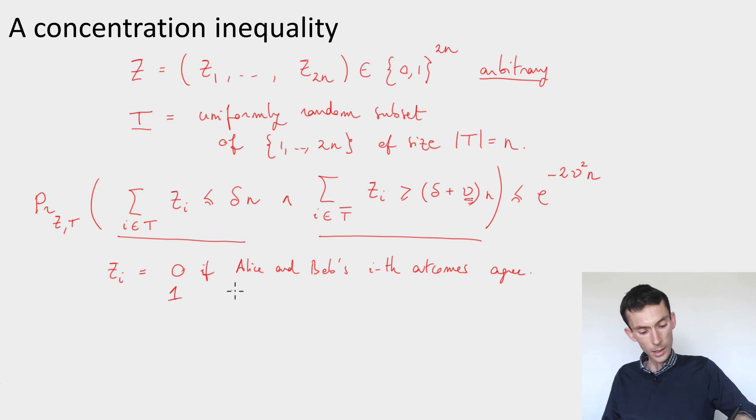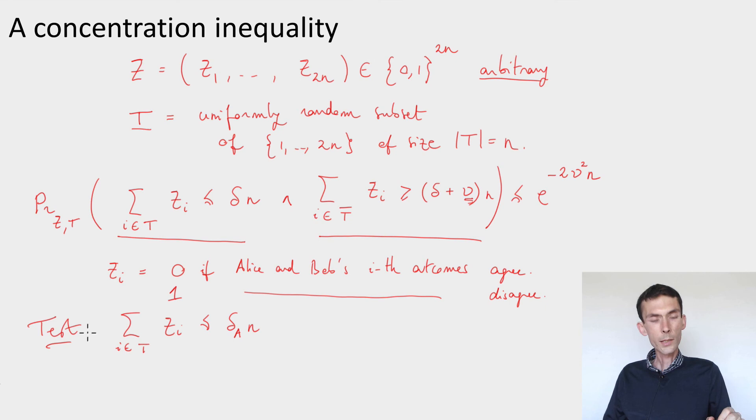and 1 if Alice and Bob's ith outcomes disagree. So then in that case, the test that is performed in the protocol is exactly choosing a uniformly random subset t, like the one that is here, and checking that the sum for i in t of the zi's is at most the error tolerance, delta, times n. And the inequality here will say that as long as this is the case,